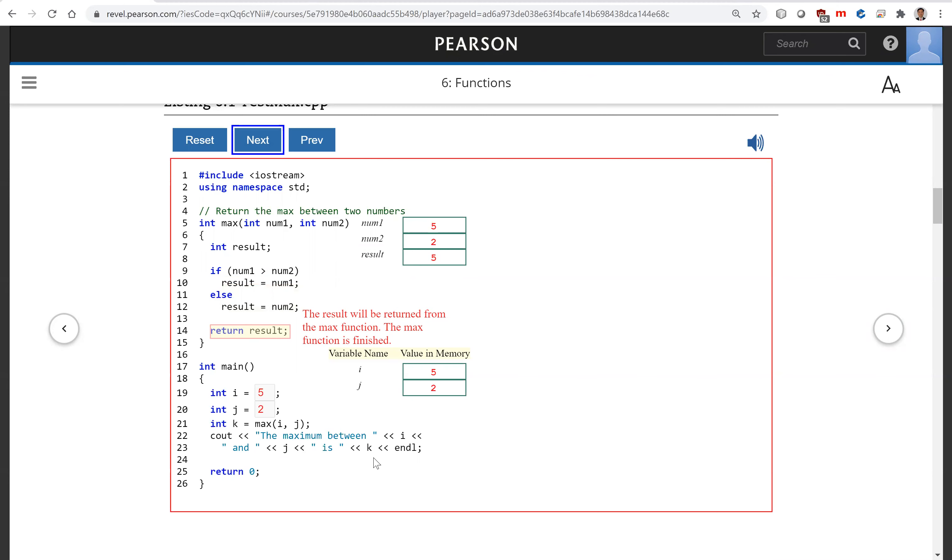The max function is finished. So we're going to return the result back to the caller. So this is right here. The max here. The return value is assigned to variable k. This is how a function is called, how the arguments are passed to a function.